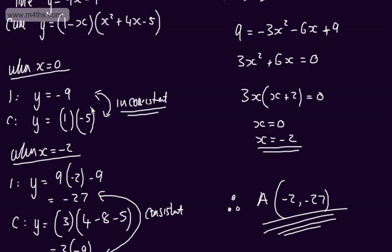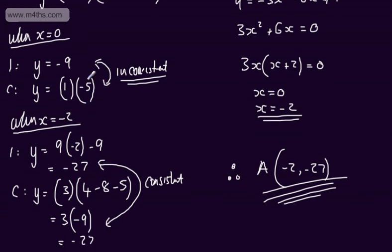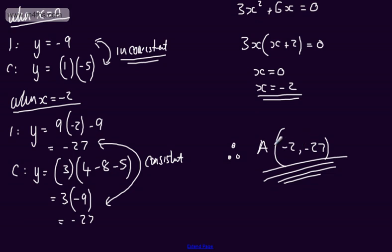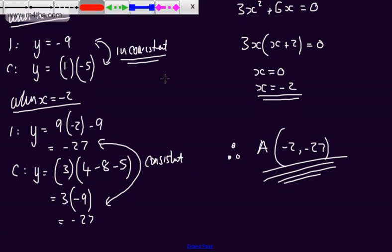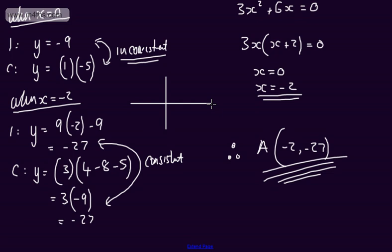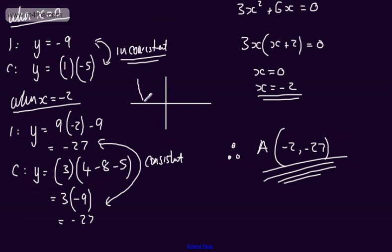x equals 0 does not satisfy both — it's inconsistent. x equals minus 2 does. So our final answer is A at minus 2, minus 27. If you think about a quick sketch, we have the curve and there must be a point that lies on both the curve and the line — not just the line or just the curve.